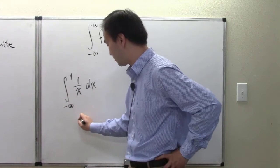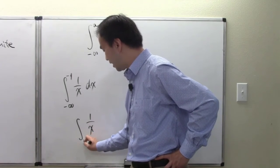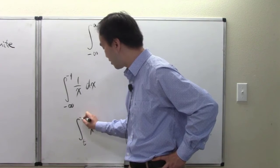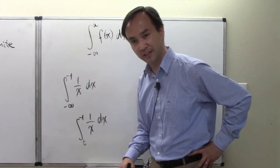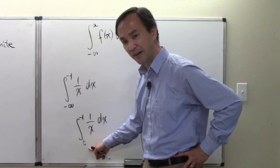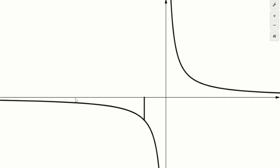The plan: create a definite integral from an arbitrary t value — where t is less than negative one — to the upper limit of negative one. The blue shaded area on Desmos represents this accumulation from t to negative one. Then we let t go to negative infinity.